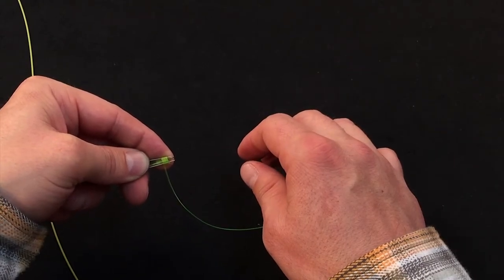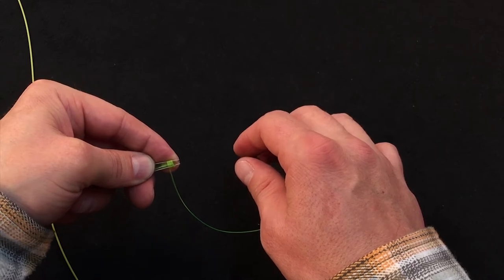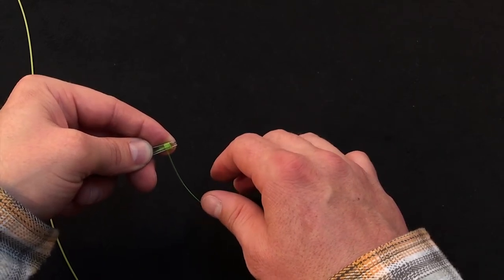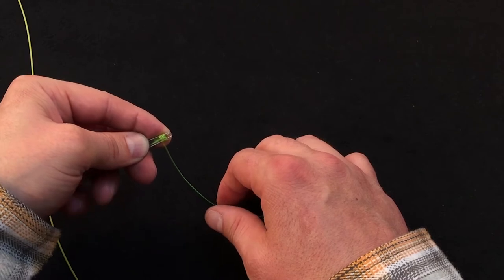We don't want to use any more than four or five loops because too much mass on the end of a floating line will sink it. So four or five loops is about the perfect balance.